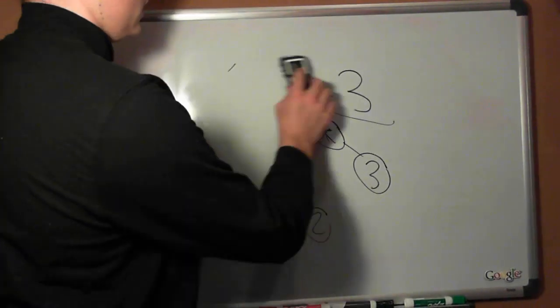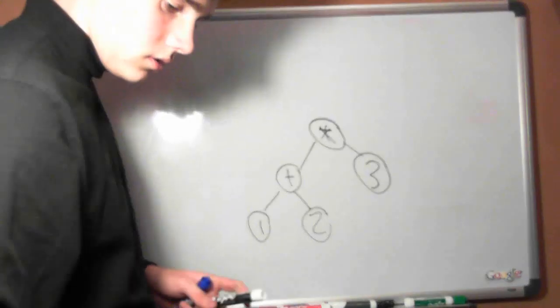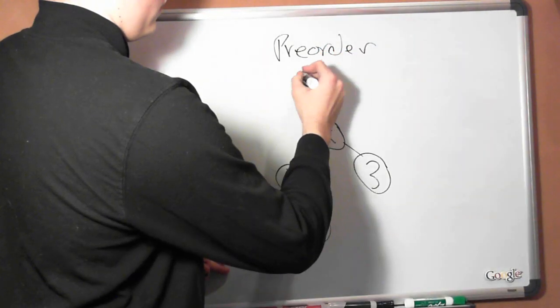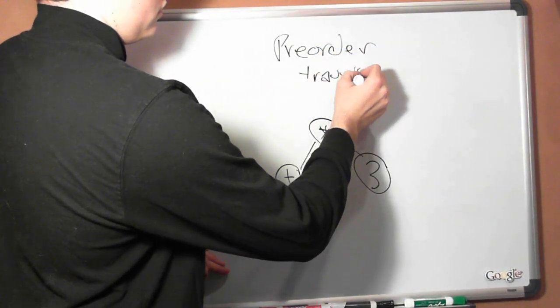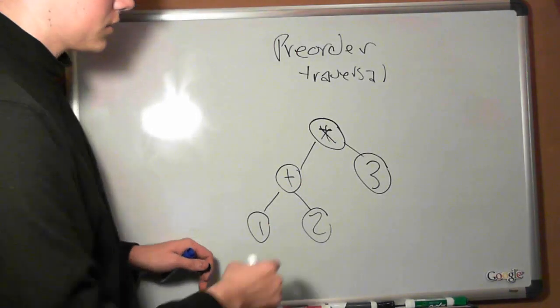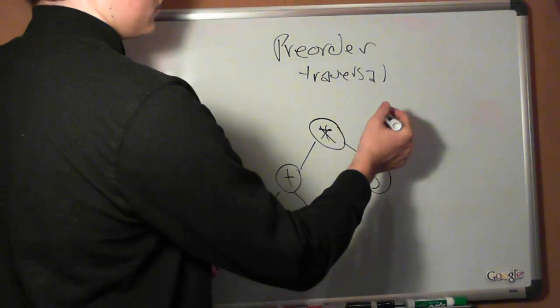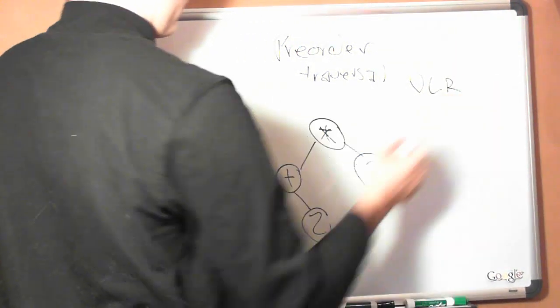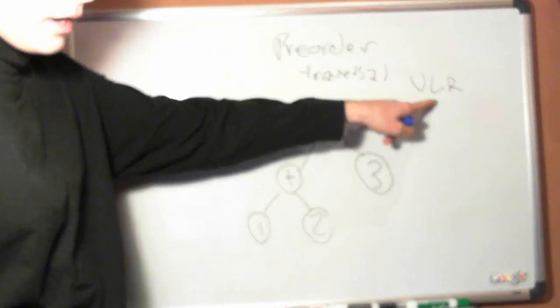Now comes the prefix preorder traversal of this binary tree here. For preorder traversal we have the expression VLR, for value left right.